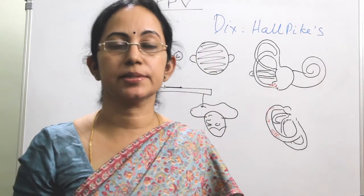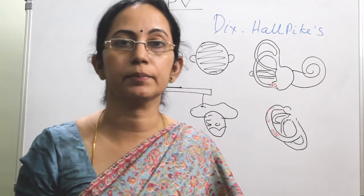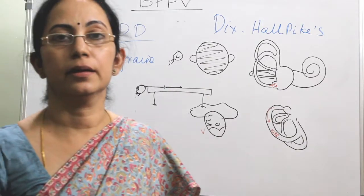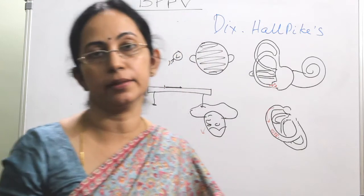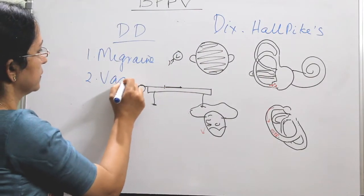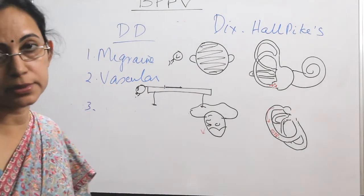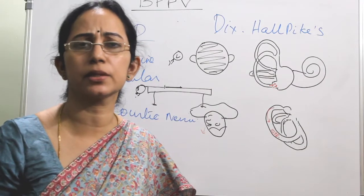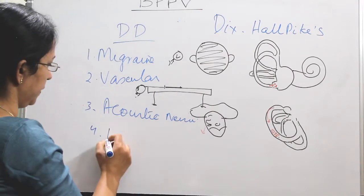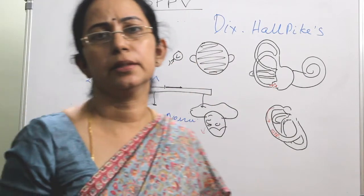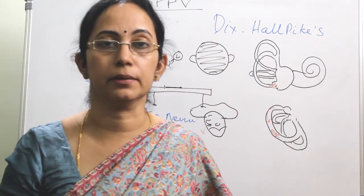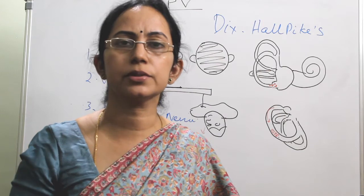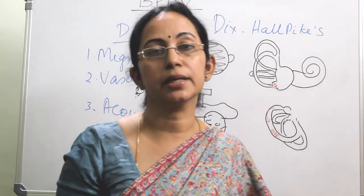Some clinical conditions can mimic BPPV — these are the differential diagnoses. The most common is a migrainous attack; especially in children, migrainous vertigo can present a clinical picture similar to BPPV. Other conditions include vascular compression, cerebellopontine angle tumors like acoustic neuroma, and in some cases multiple sclerosis will also mimic BPPV. The diagnosis is based on typical history and clinical findings, mainly nystagmus induced by Dix-Hallpike maneuver.